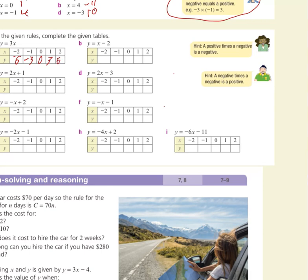For y equals x minus 2, I've got to take 2 from it: minus 4, minus 3, minus 2, minus 1, 0. Once you start seeing the pattern, you should be able to continue it. For y equals 2x plus 1: multiply x by 2 — minus 2 gives minus 4, plus 1 gives minus 3. Then minus 2 plus 1 gives minus 1. Then 2 times 0 is 0 plus 1 is 1 — going up by 2 every time.